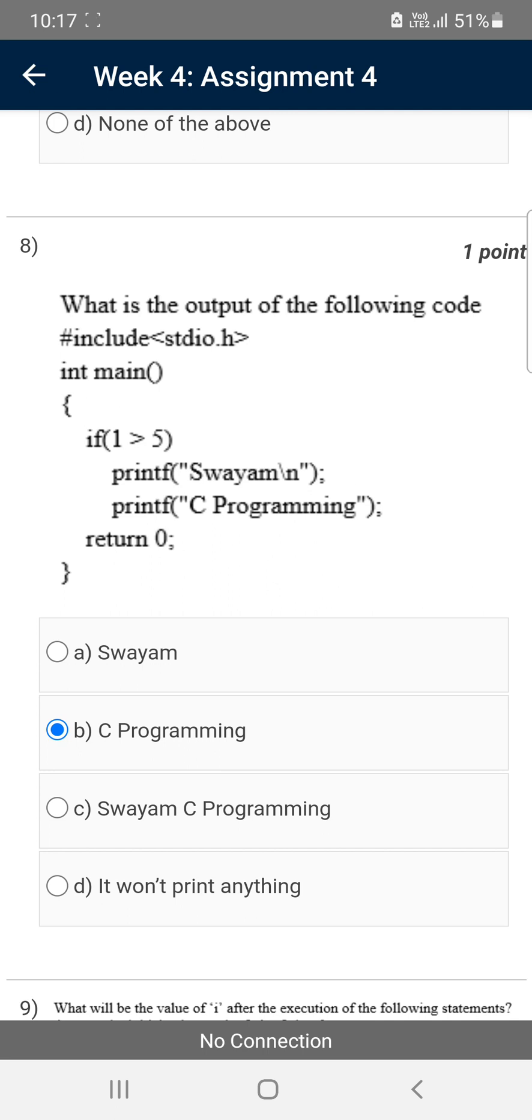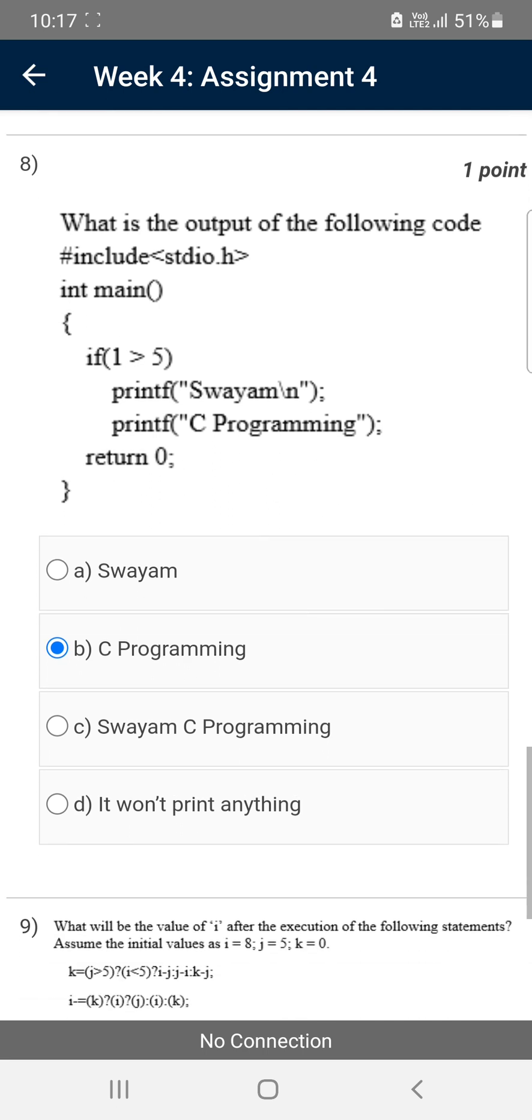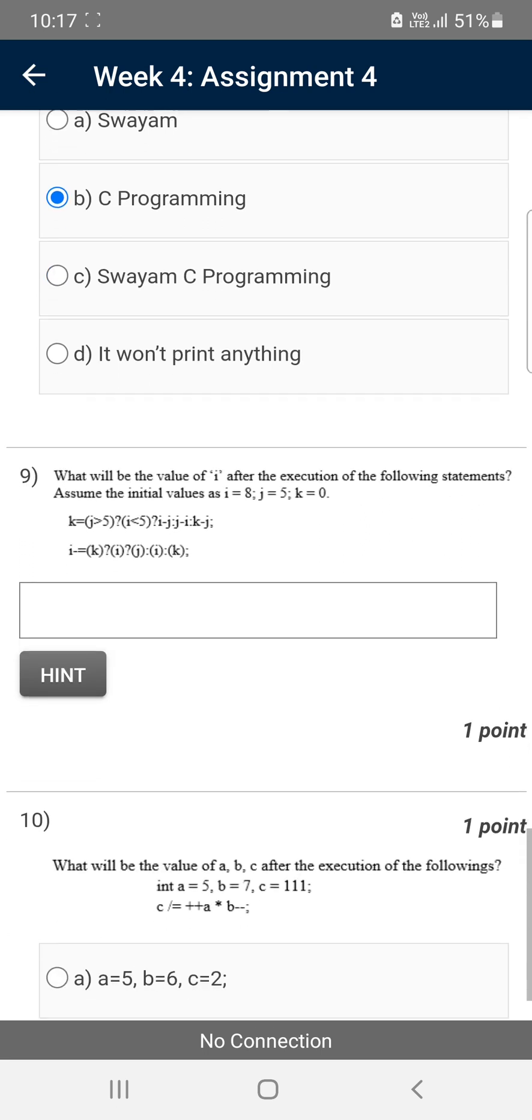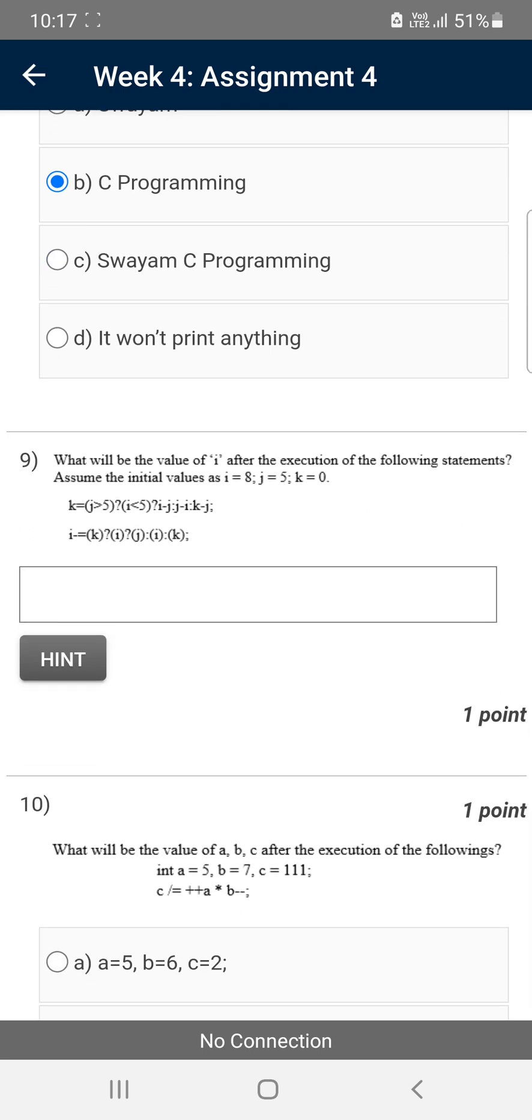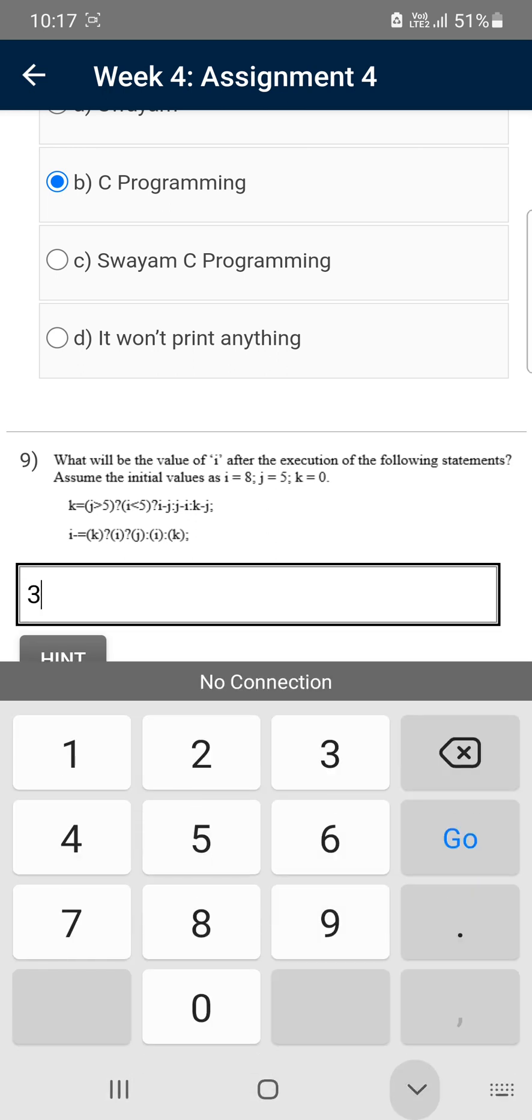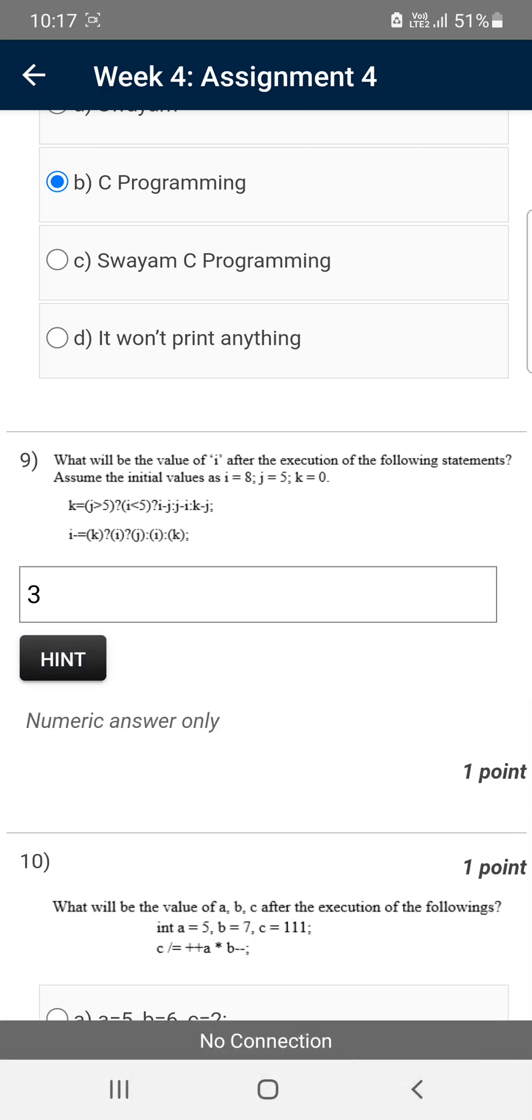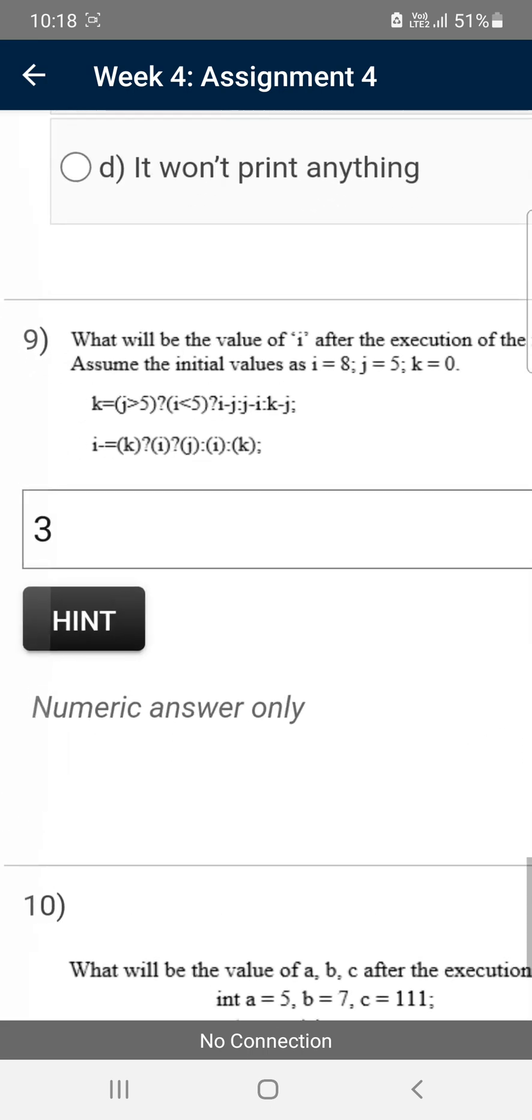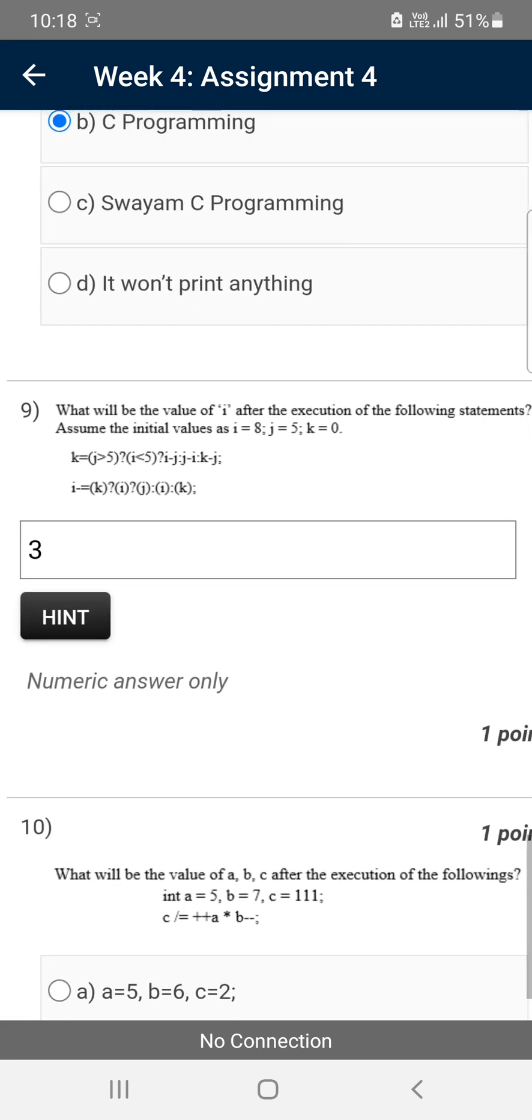Moving on to the ninth question: what will be the value of i after executing the given code? For the ninth question, I got the answer as 3. The hint says numeric answer only, so 3 is the answer.